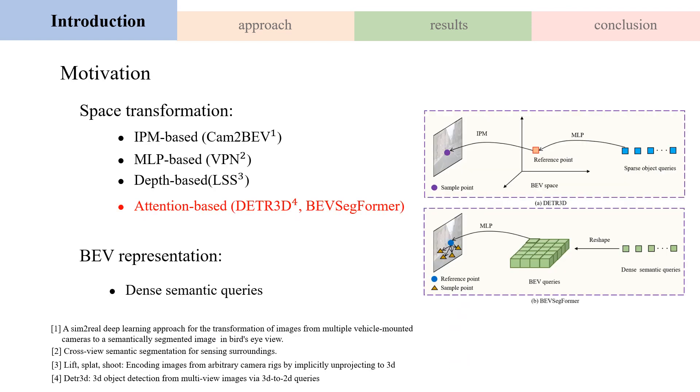Motivation of this work: Space transformation is the basis of BEV segmentation. There have been many works using different ways to transform image space features into BEV space, for example, IPM-based, MLP-based, depth-based, and attention-based.